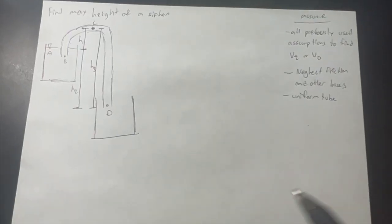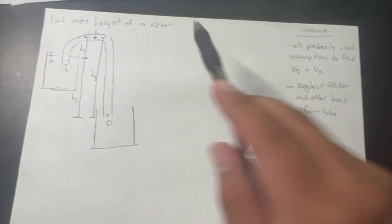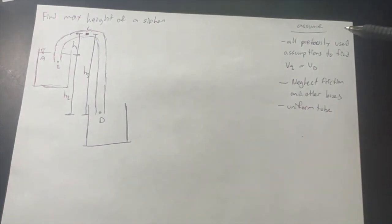In this problem, we will be finding the maximum height of a siphon. To do this, we need to assume all previously used assumptions to find V2, or in this case VD, neglect friction and other losses, and assume the tube is uniform.